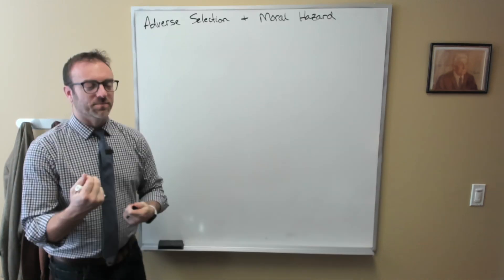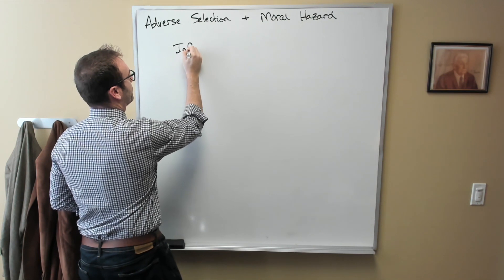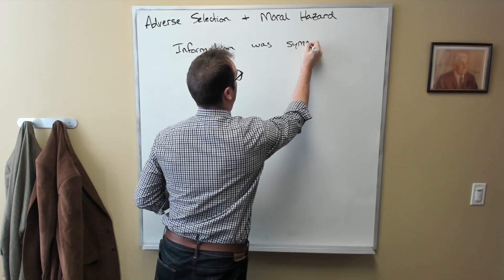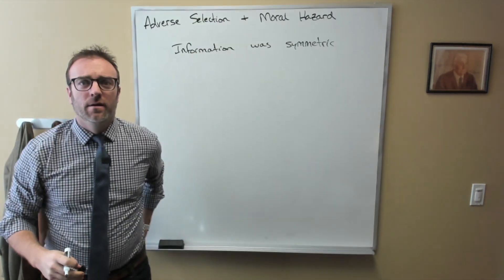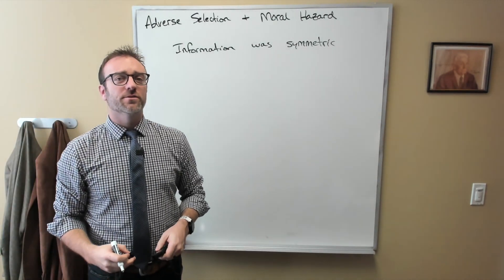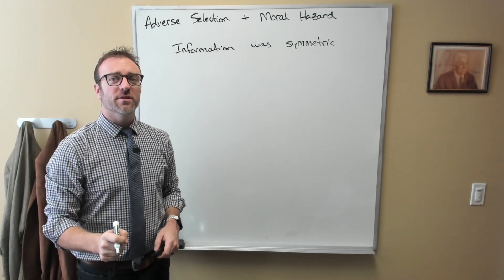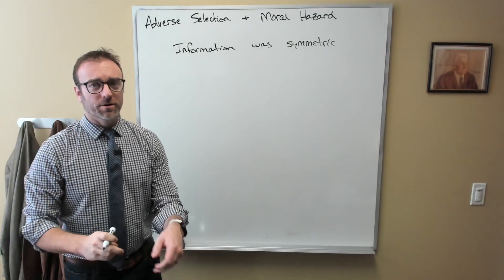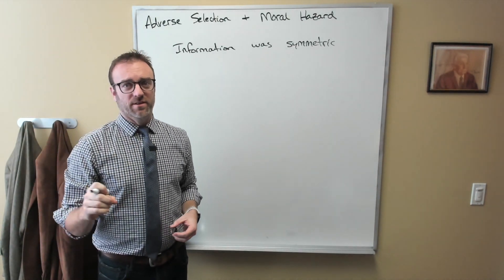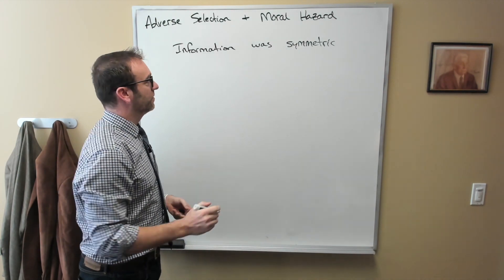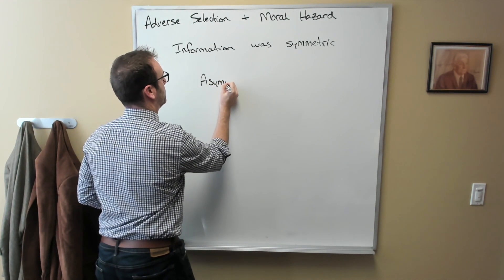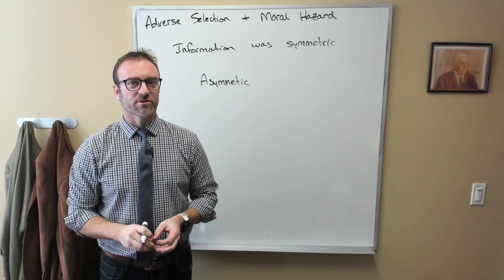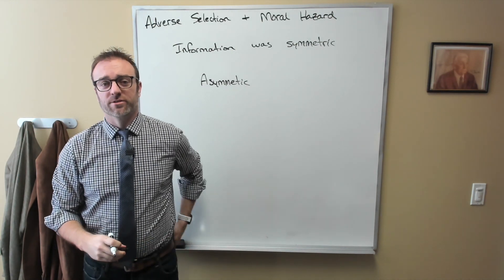In fancy econ speak, we had assumed that that information was symmetric. In other words, both the insurance company and the person buying insurance knew it, and they knew that the other person knew it too. A situation where one party knows more relevant information than the other will be described as a situation where information was asymmetric. With asymmetric information, one side of the transaction has more information relevant to the exchange than the other.